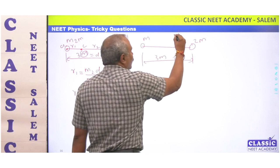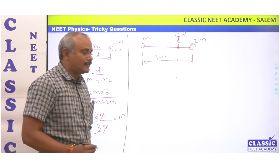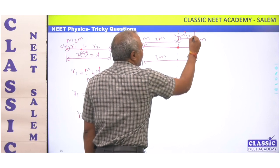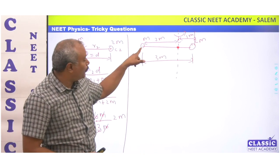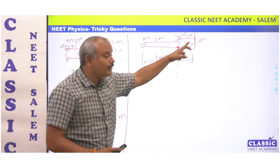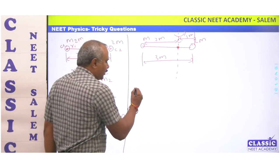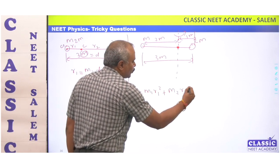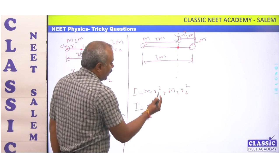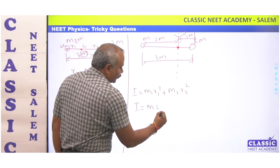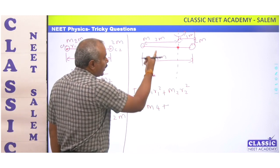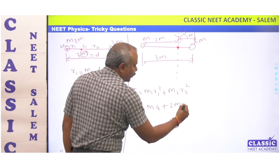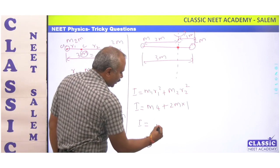We are rotating with respect to this axis. This is a point mass and this is a point mass. The distance for mass m is 2m and the distance for mass 2m is 1m. So I equals m1 r1 squared plus m2 r2 squared: m times 2 squared plus 2m times 1 squared, which gives 4m plus 2m, so I equals 6m.